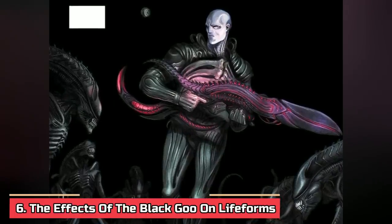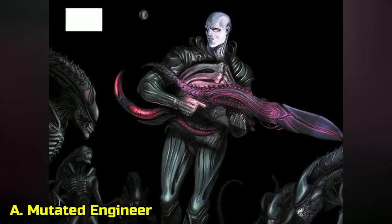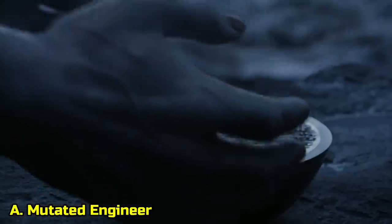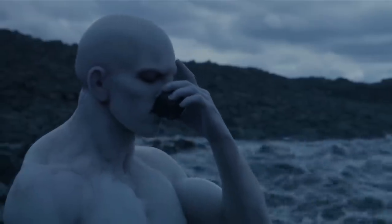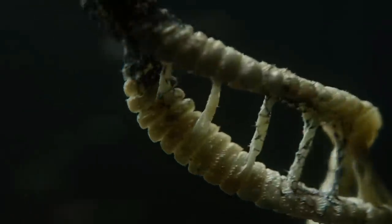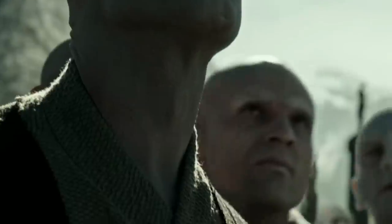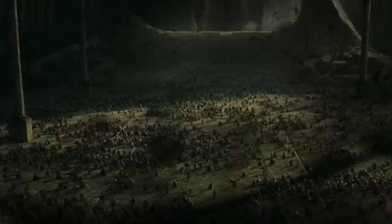Number 6: The Effects of the Black Goo on Life Forms. A: Mutated Engineer. The liquid appears to have different effects on the engineers depending on the film. In Prometheus, the sacrificial engineer ingested a small amount of the pathogen and promptly began to dissolve, spawning new life in the surrounding waters — as the planet was likely Earth, the engineers appeared to intend to create humans. However, in Alien Covenant, David unleashed a large amount of the liquid on an engineer city, causing the engineers to dissolve in a more violent manner and eradicating all local wildlife — here the pathogen was being utilized as a weapon.